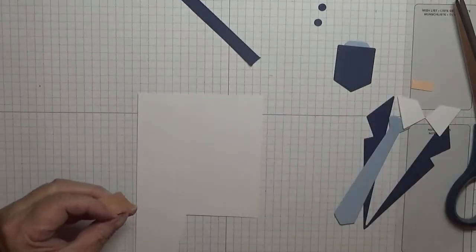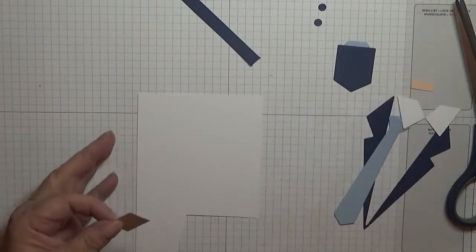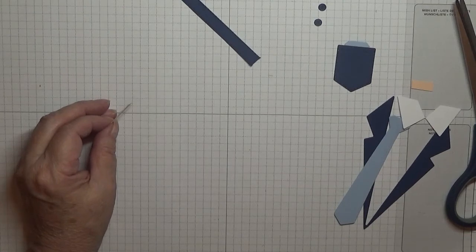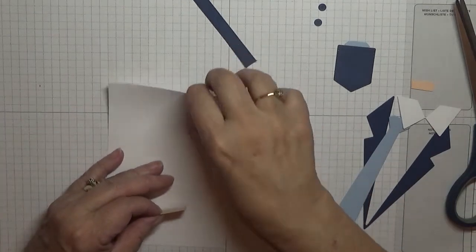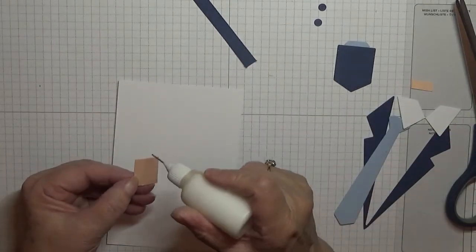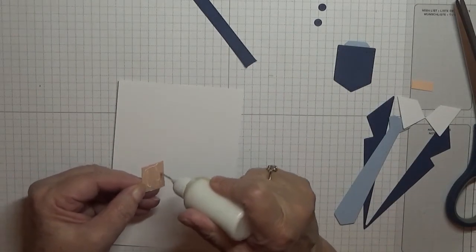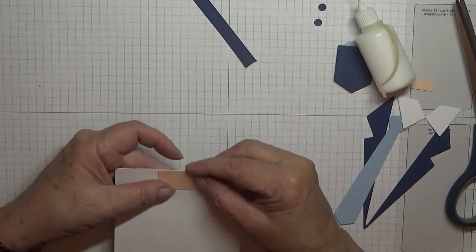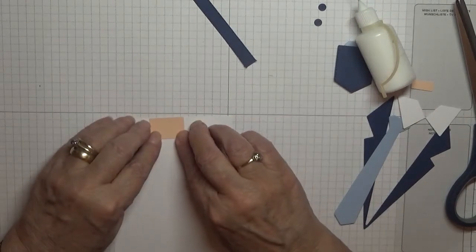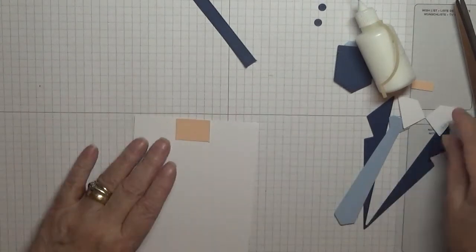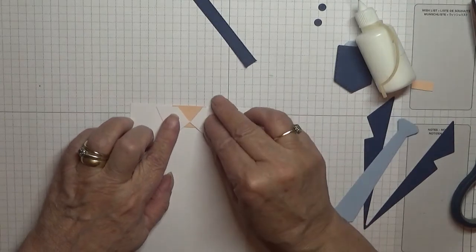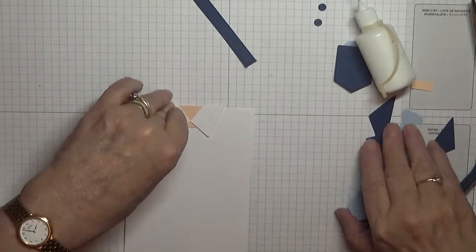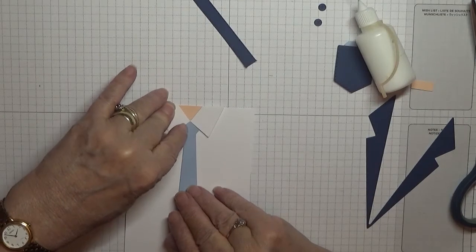So what we need to do is, I'm actually going to get a whole piece. What I'm going to do is glue this down first, right to the edge. Then I'm going to glue the neck, the collar down. I've got to slip the tie under there like that.